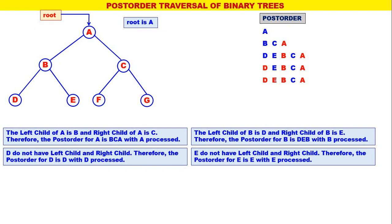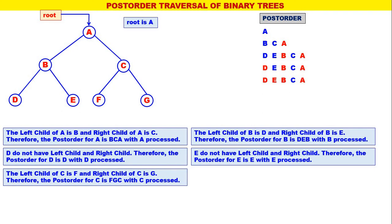Now the leftmost is C. The left child of C is F and the right child of C is G. Therefore, the post-order for C is F, G, C — with C processed. Therefore, C is replaced by F, G, C with C processed.